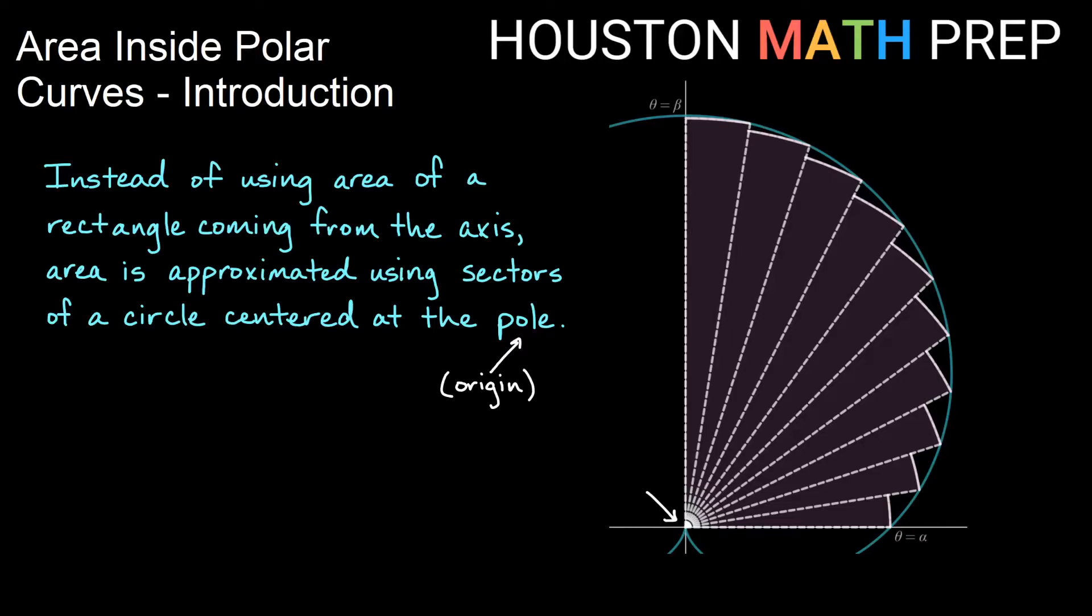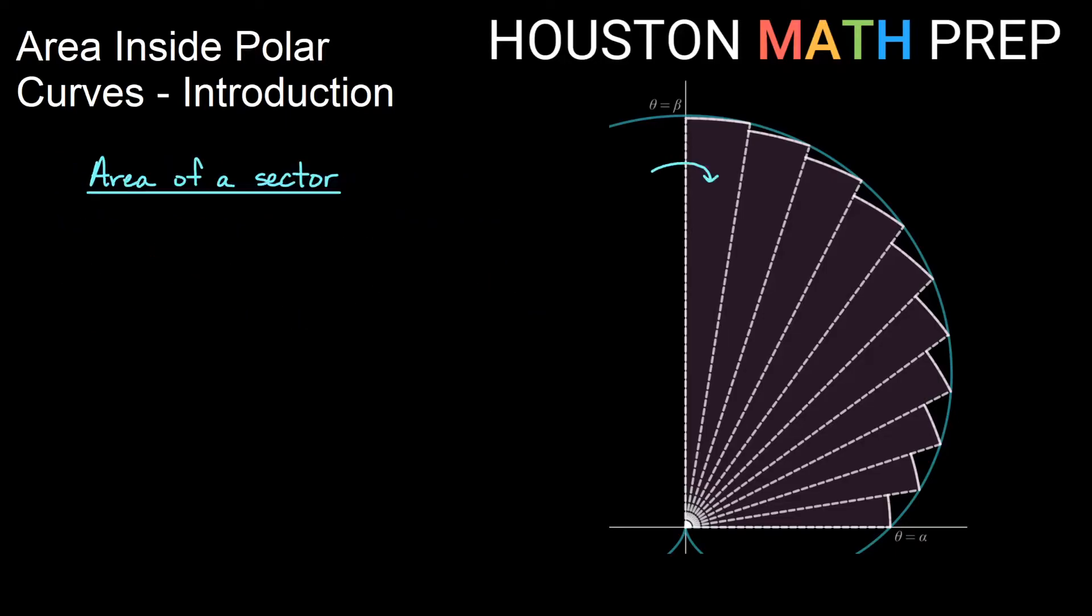Area for a rectangle was easy, it was just width times height. Area of a sector of a circle is not so bad either, so if we just take what is the formula for the area of one of these sectors here that I have in my curve, well it's a piece of a circle, right? So we know it's some portion of pi r squared, which is the area of a circle.